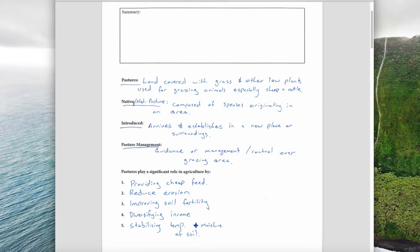A native pasture is composed of species originating in a particular area. Obviously native means things that are native to an area or to the country and have been here for a very long time.